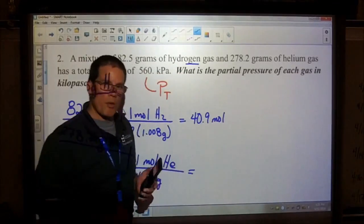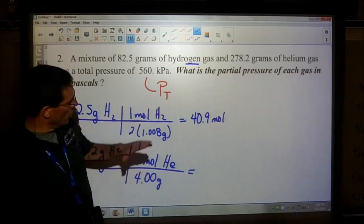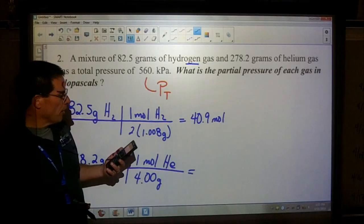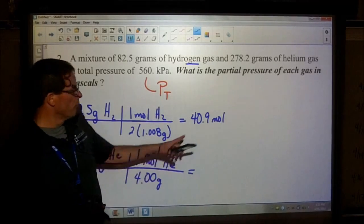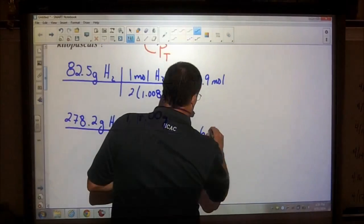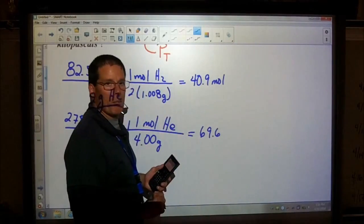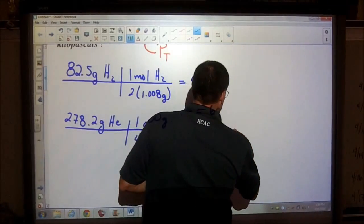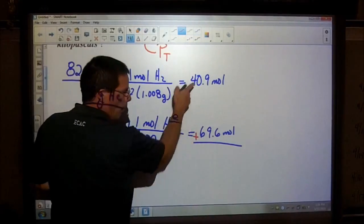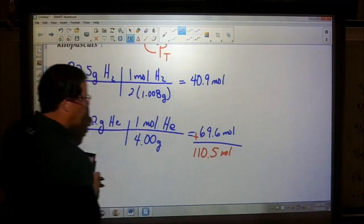Do not round the mole amounts. The calculator gives 40.9226 moles of hydrogen — showing three sig figs is fine, so about 40.9 moles. For helium the calculator gives 69.55, so about 69.6 moles. Adding these together gives a total of 110.5 moles of gas in the system.